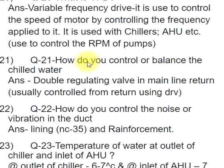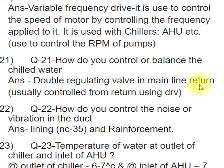Q21: How do you control or balance the chilled water? ANS: Using a double regulating valve in the mainline return — usually controlled from the return using DRV.